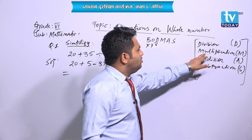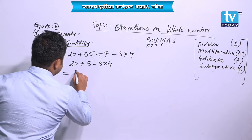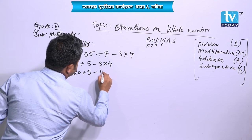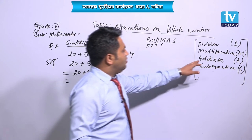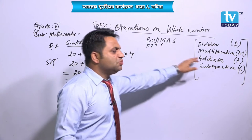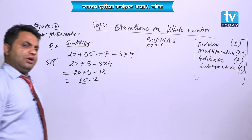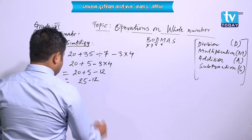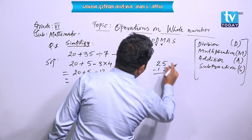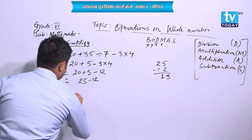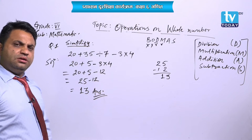Now multiplication: 20 plus 5 minus 12. Now addition: 20 plus 5 is 25, minus 12. Then subtraction: 25 minus 12 — 5 minus 2 is 3, 2 minus 1 is 1 — that means 13 is the answer.